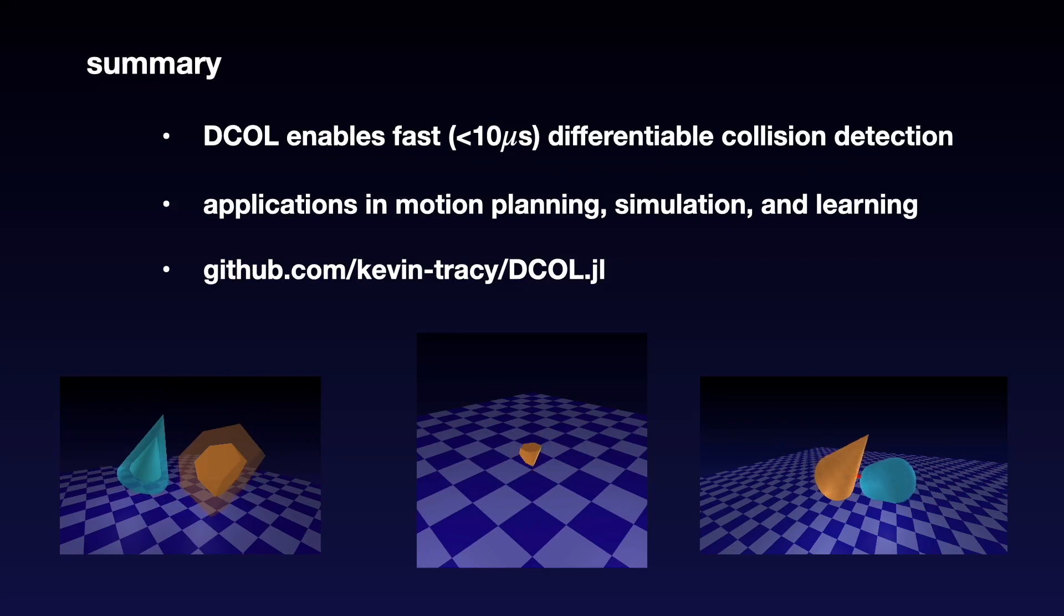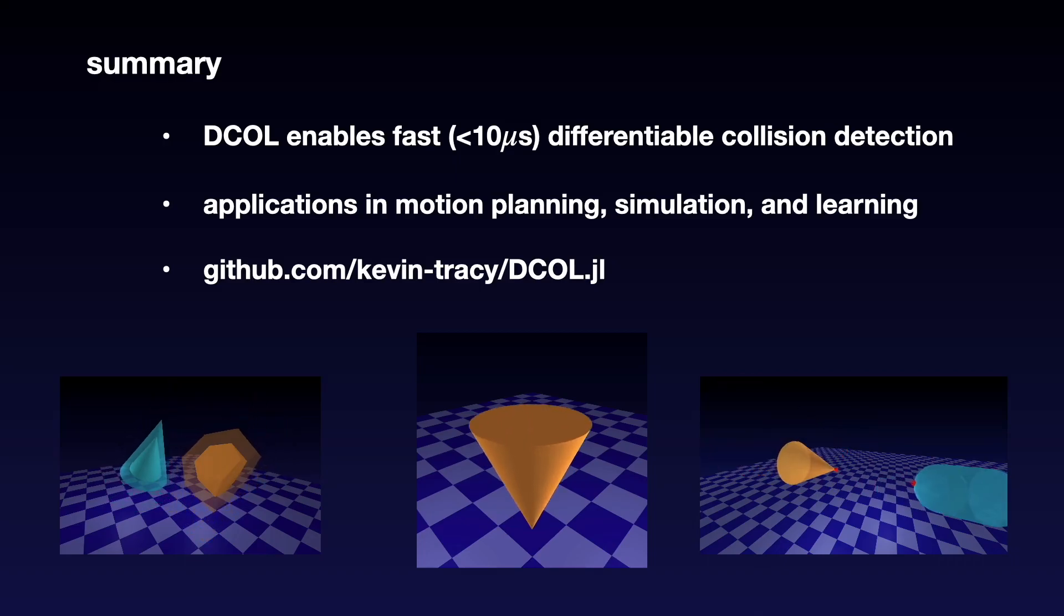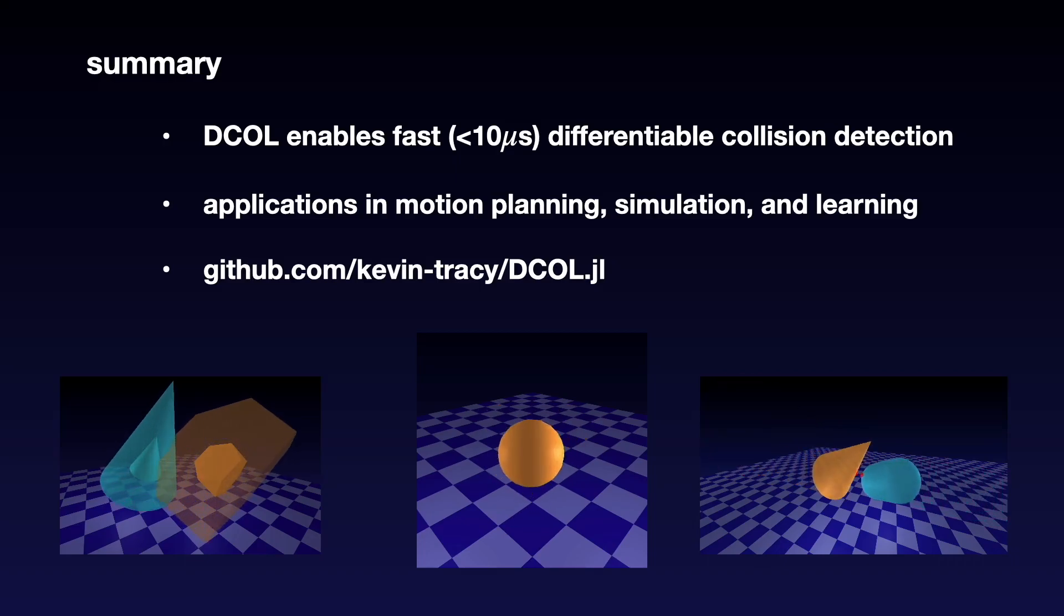In summary, DCOL enables fast, differentiable collision detection with many applications in motion planning, simulation, and learning. Furthermore, an open-source implementation of DCOL is provided in the Julia language on GitHub.